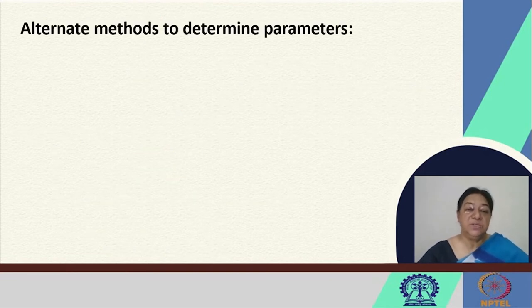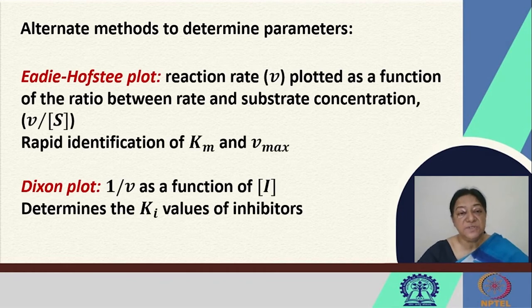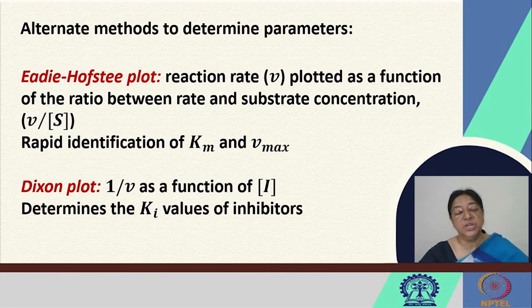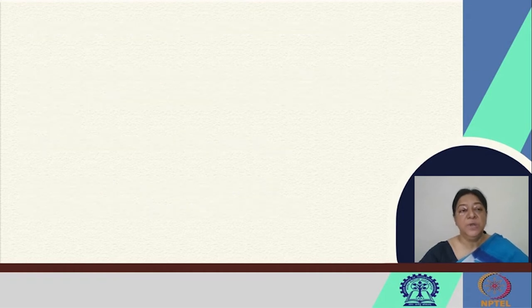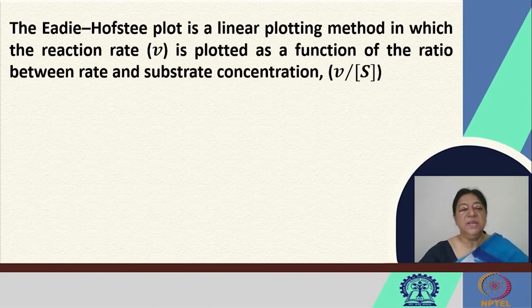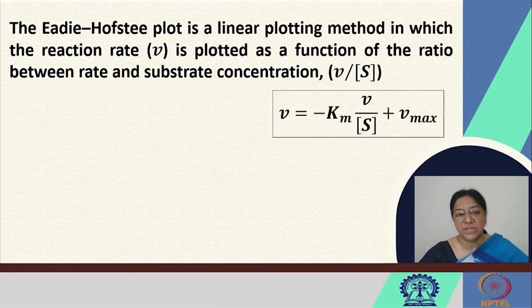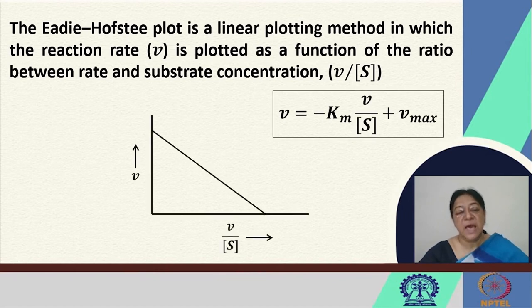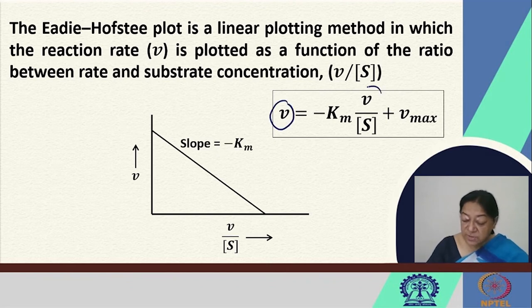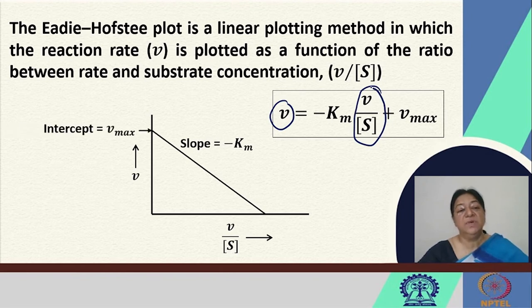If we look at alternate methods to determine these parameters, there are other plots available. One is the Eadie-Hofstee plot, where the reaction rate is plotted as a function of the ratio between the rate and the substrate concentration, allowing identification of Km and Vmax. The Eadie-Hofstee plot is a linear plotting method where the slope corresponds to −Km: plotting V versus V/[S] gives −Km as the slope and Vmax as the intercept, allowing rapid identification of Km and Vmax.